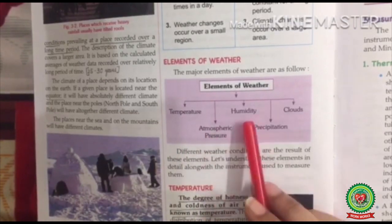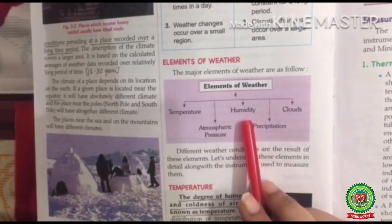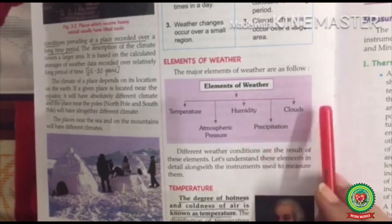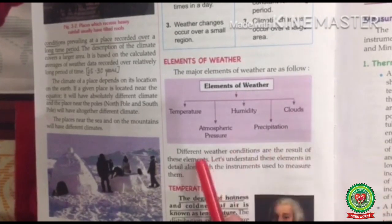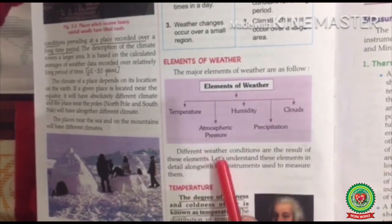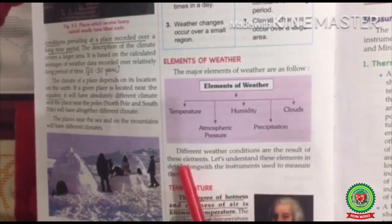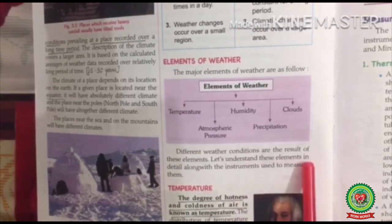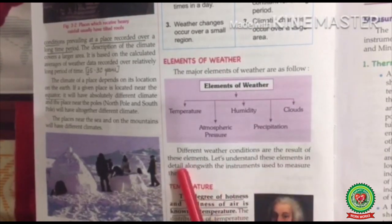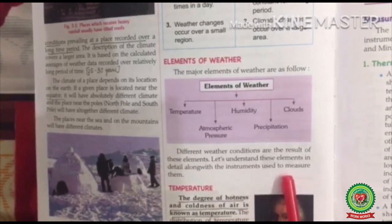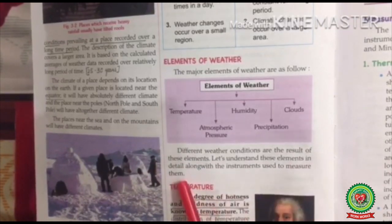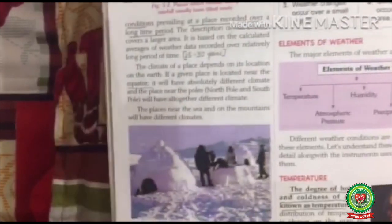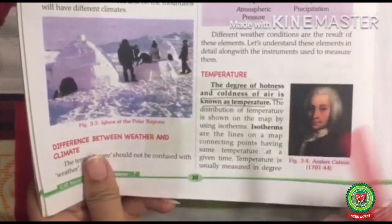The major elements of weather are as follows: number one, temperature; number two, atmospheric pressure; number three, humidity; number four, precipitation; number five, clouds. Different weather conditions are the result of these elements. Let's understand these elements in detail along with the instruments used to measure them. Temperature.